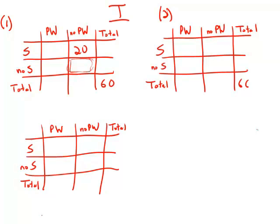Moving on to statement number two. Of these 60 cars sold, 30 had both power windows and stereo. So 30 there. But again, we want to figure out this and we know nothing in the row or the column. So right now, statement number two by itself is insufficient.